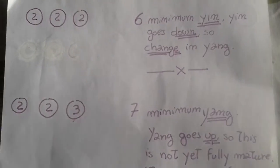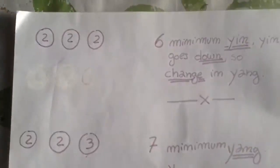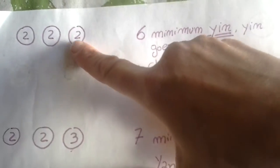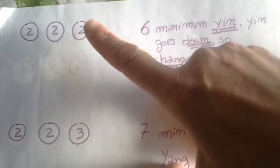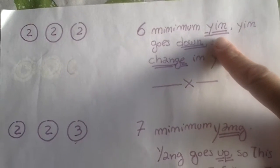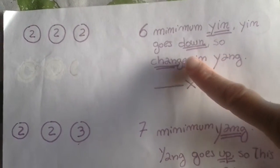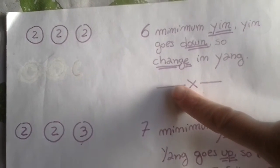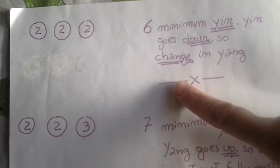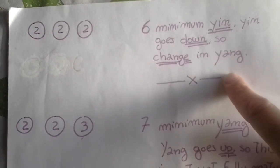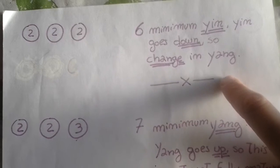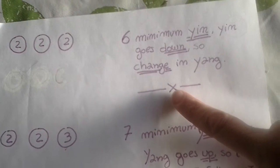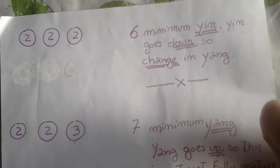Which means that when we draw our coins and we get two, two, two, which makes six together, this is the minimum yin number that you can have. Yin goes down, so this changes into yang. You will draw a broken line with a cross in the middle to signify that it's a line that is changing into a yang line. We'll see later what it means. Either here in the center or on the side.